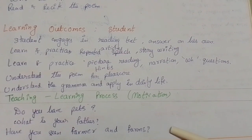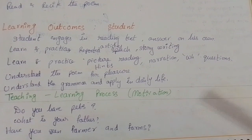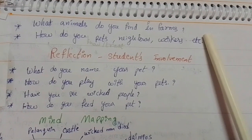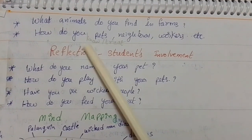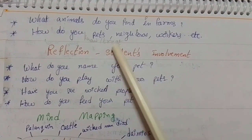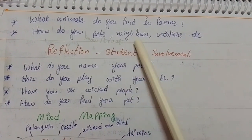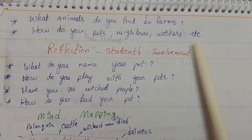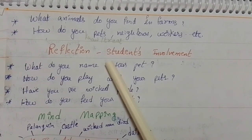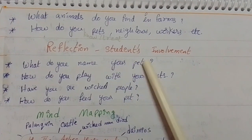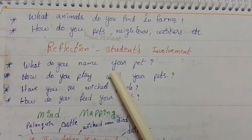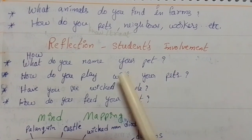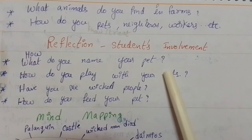We ask: what animals do you find on farms, how do you treat your pets, neighbors, workers, etc. For reflection, we ask students: how do you name your pet, or what do you name your pet?